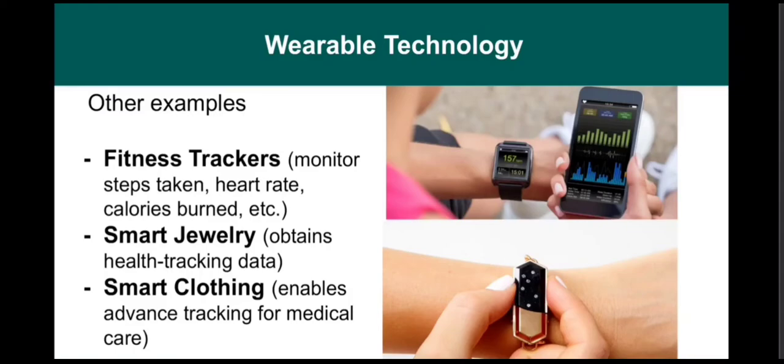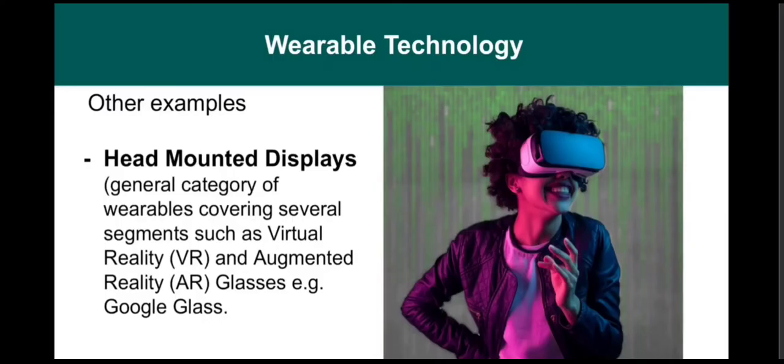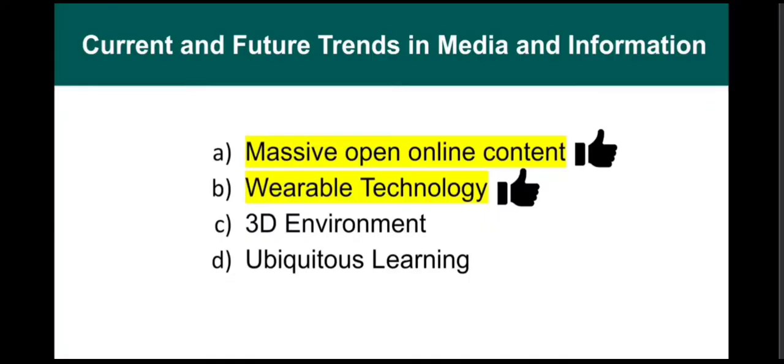Other examples of wearables are fitness trackers, smart jewelry, and smart clothing. We also have head-mounted displays, which is a general category of wearables covering several segments such as virtual reality and augmented reality glasses. That's it for wearable technology — there are also other examples I suggest you search online.